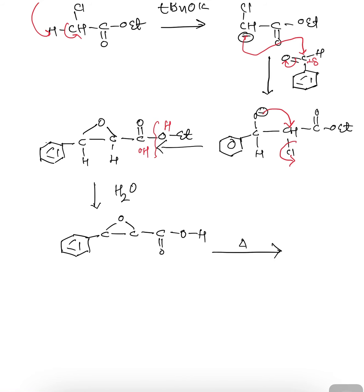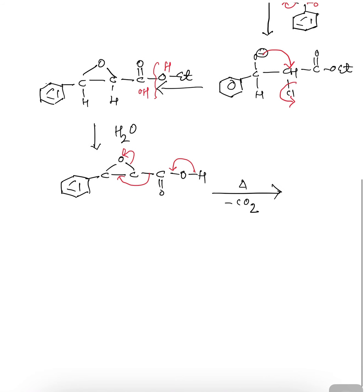If we carry out the reaction at higher temperature, there will be elimination of a CO₂ molecule — as we have already discussed in the earlier mechanism. With the elimination of CO₂, the resulting structure shows a negative charge on oxygen and formation of a double bond between two carbon atoms.